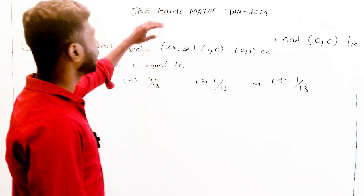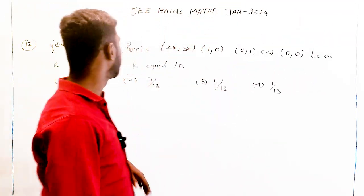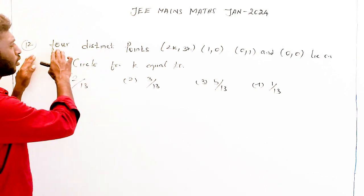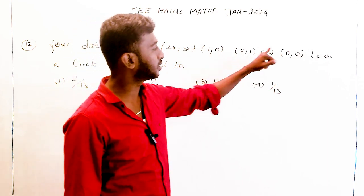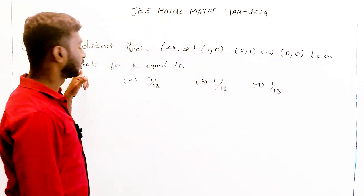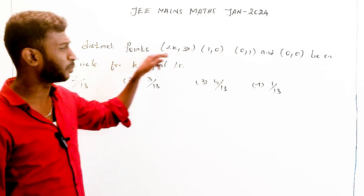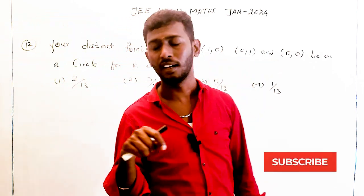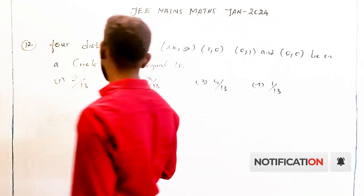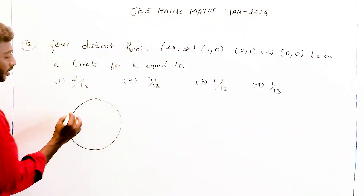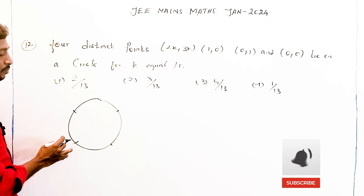Hi students. JW Mainz Max, January 2024, Question number 12. Four distinct points — (2k, 3k), (1, 0), (0, 1), and (0, 0) — lie on a circle, for k equal to some value r. We are going to take one circle and find the value of k such that these 4 points lie on it.